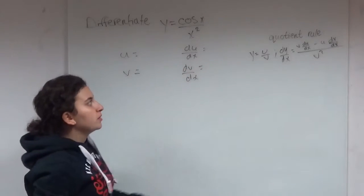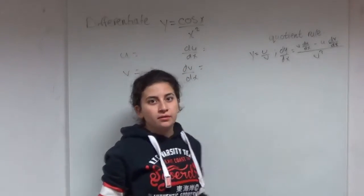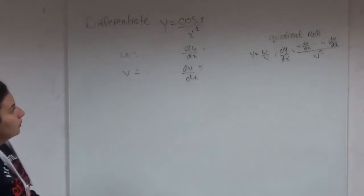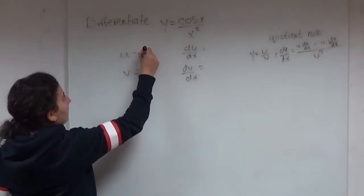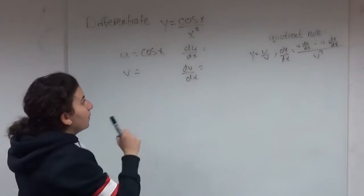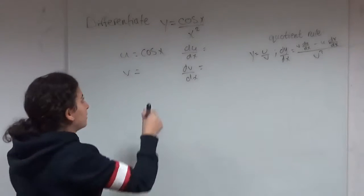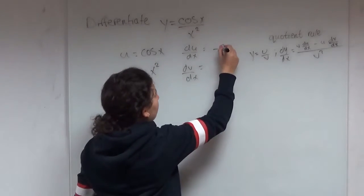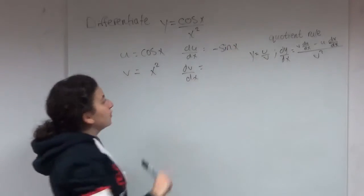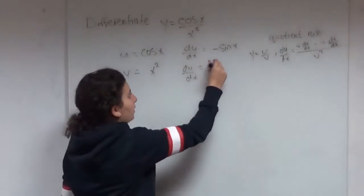And as soon as we find them, we can immediately sub them in and find the differential. So our u is our numerator, that's cos x. Our v is our denominator, which is x squared. Differentiate cos x, we get minus sine x. Differentiate x squared, get 2x.